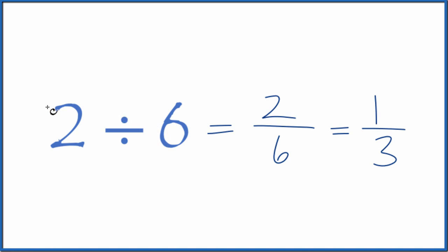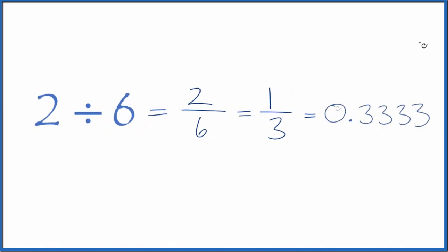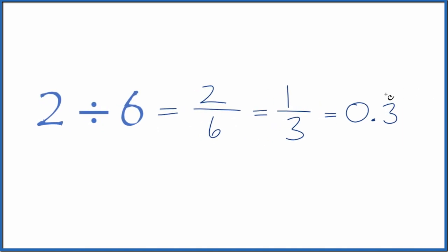You could also take a calculator and divide 2 by 6, or 1 by 3. You end up with, and the 3 just keeps repeating. So let's get rid of these, and we'll put a bar over here to show that the 3 just repeats.